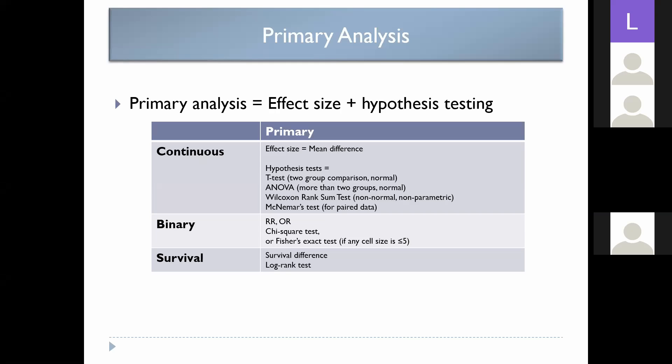The hypothesis test for a continuous variable depends on normality. If you've got a two-group comparison and both are normally distributed, you use the Student's t-test. If you've got more than two groups and they're normally distributed, you use ANOVA. If they're not normally distributed — non-parametric — then you use the Wilcoxon rank-sum test. If you have paired data — like before-and-after data — you use a McNemar's test. So just write it down in your analysis, and then you have a year to figure out how to do it.